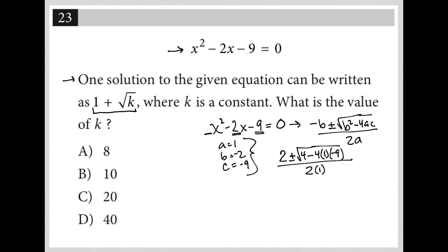If I simplify further, I'd have 2 ± √(4 + 36) over 2. Four times 1 is 4, times 9 is 36. The negatives make it positive, so 4 + 36. This becomes 2 ± √40 / 2.